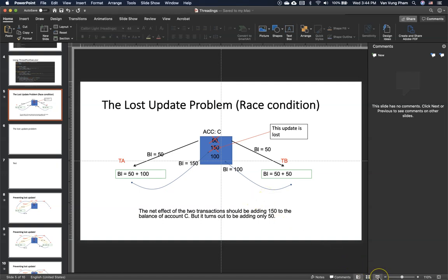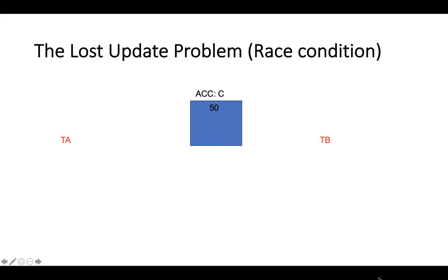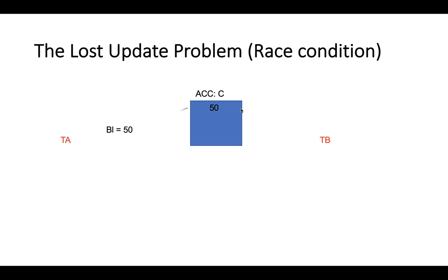When we use threading, there is a very famous problem called the lost update, or the race condition. Let's give an example. We have a current account balance for Carol which has 50 dollars. We would like to do two transactions: transaction A from Alice would like to transfer 100 to Carol, and at the same time Bob would also like to transfer 50 to Carol. Because we are running in parallel, we need to control this.